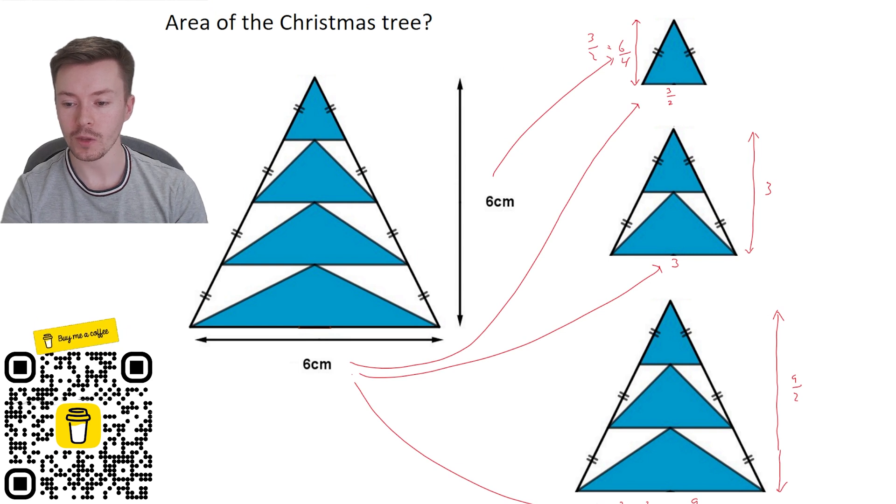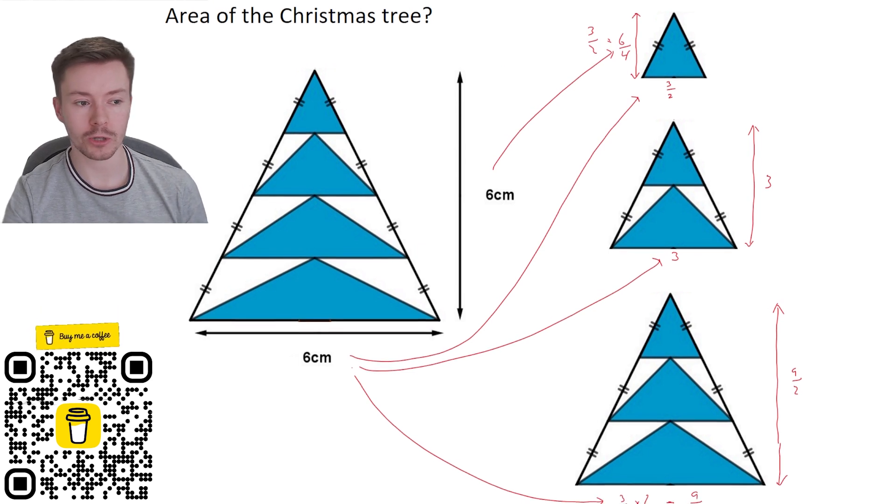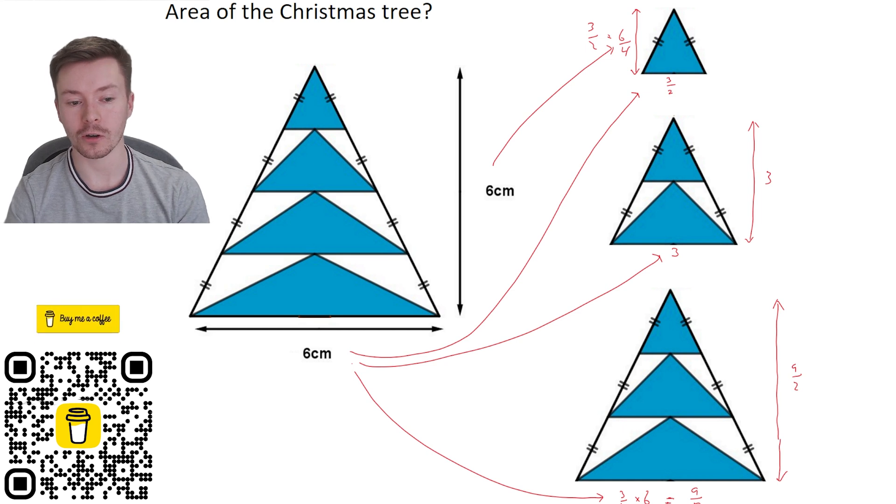Now at this point, I probably want to go back to my diagram and just annotate this on, because then I can start to work out each of the heights of the individual triangles. And it might be fairly obvious at this point, you might have already worked it out. But if you haven't, that's what I'm going to do now.